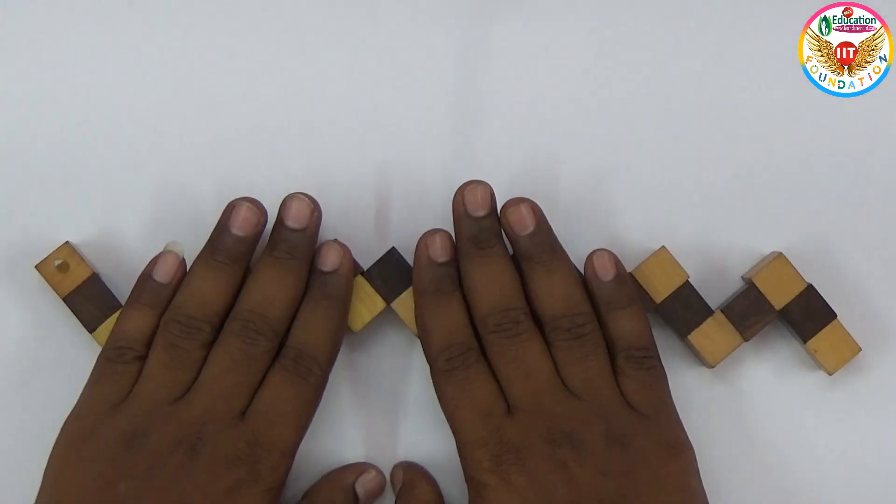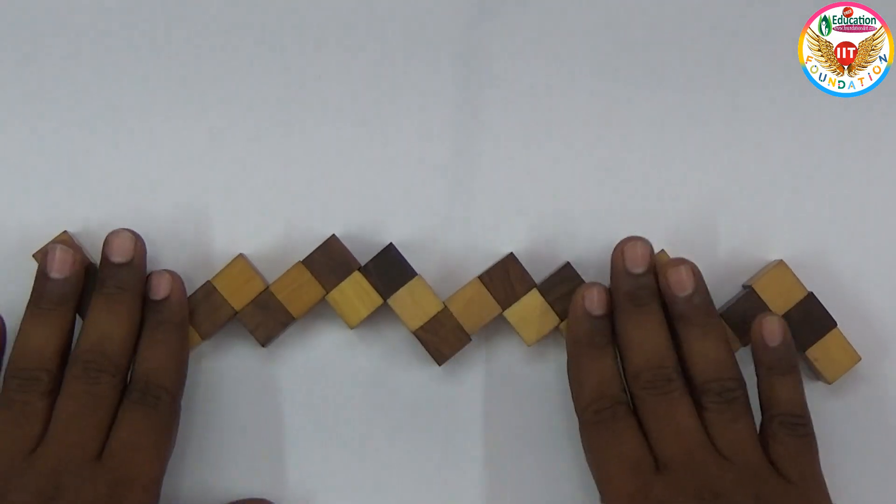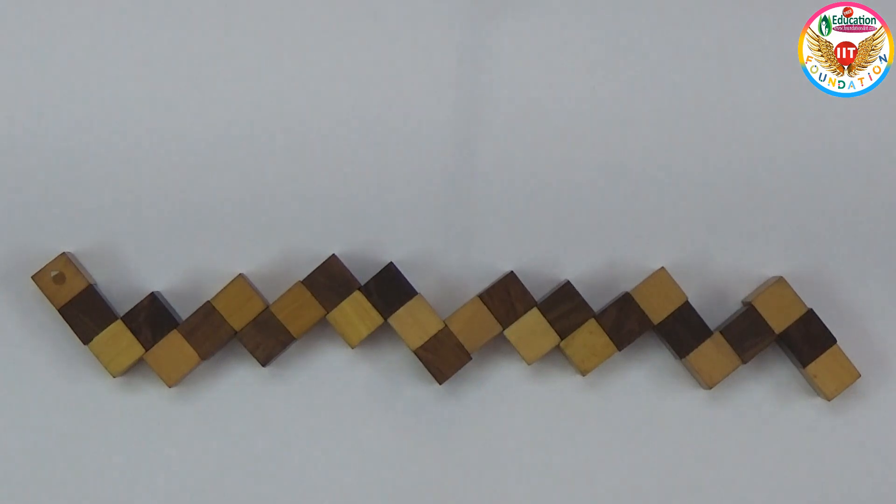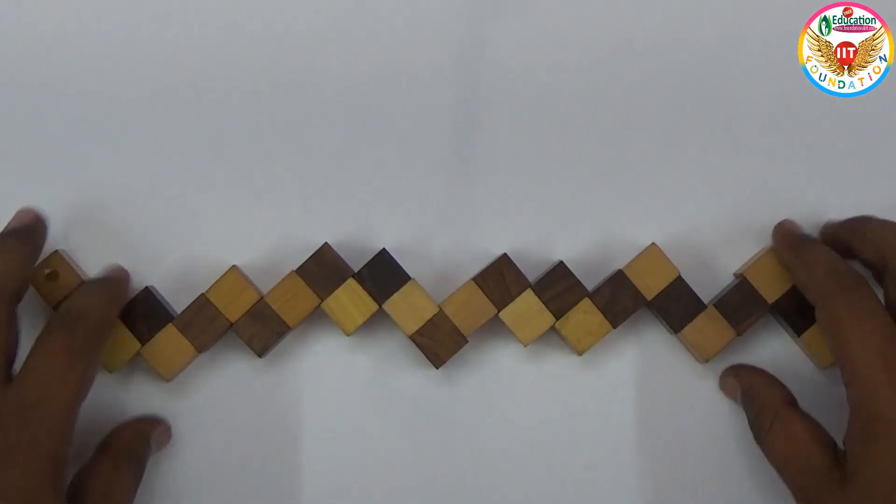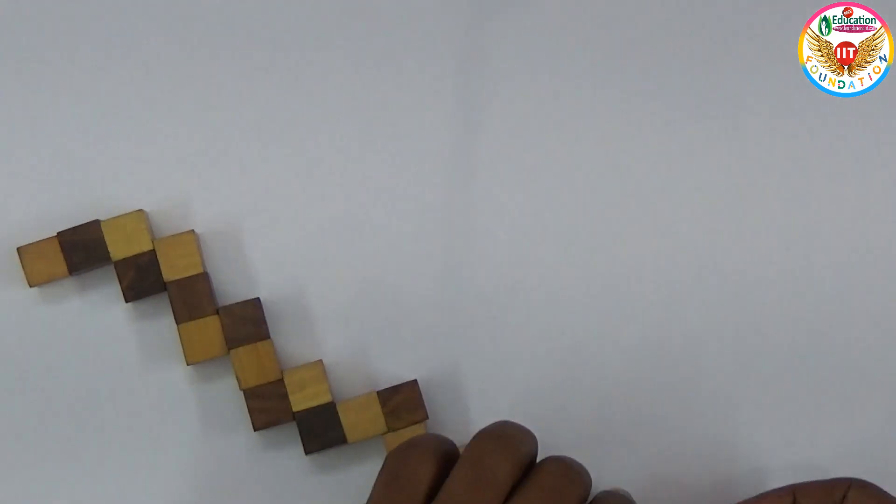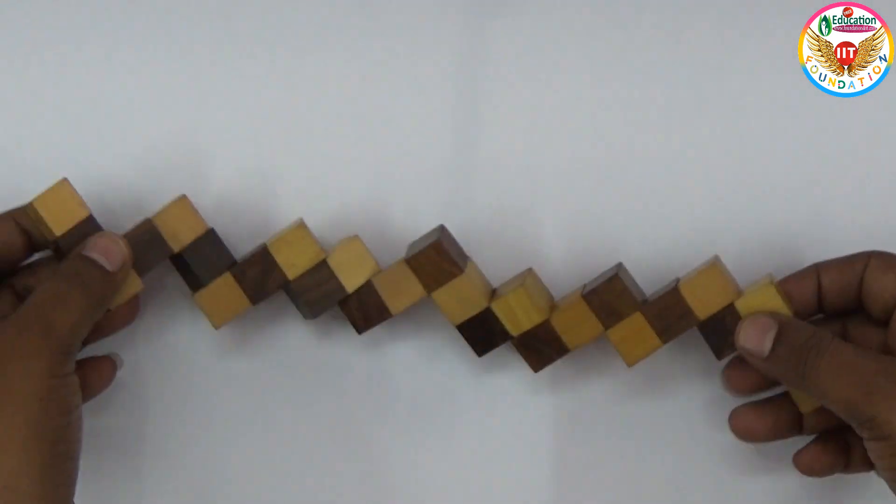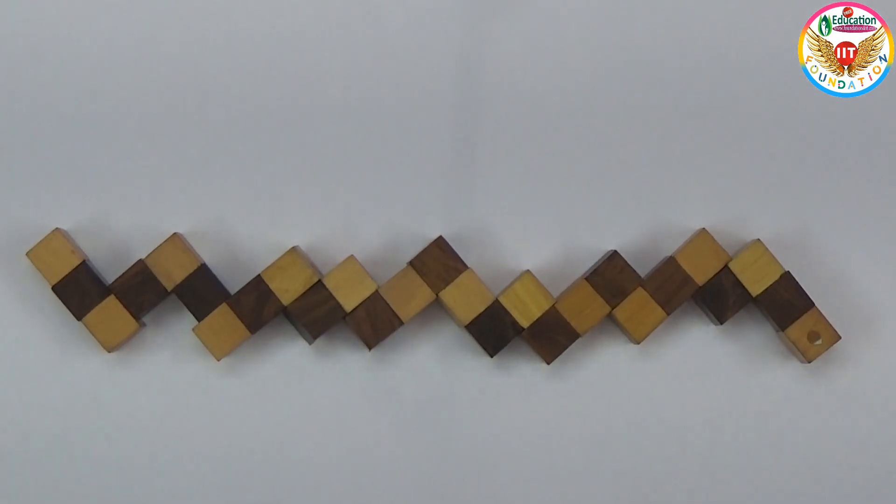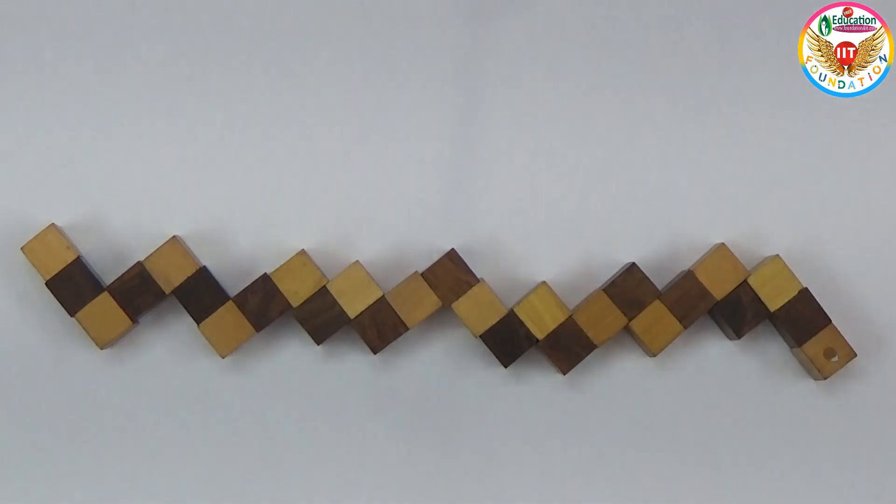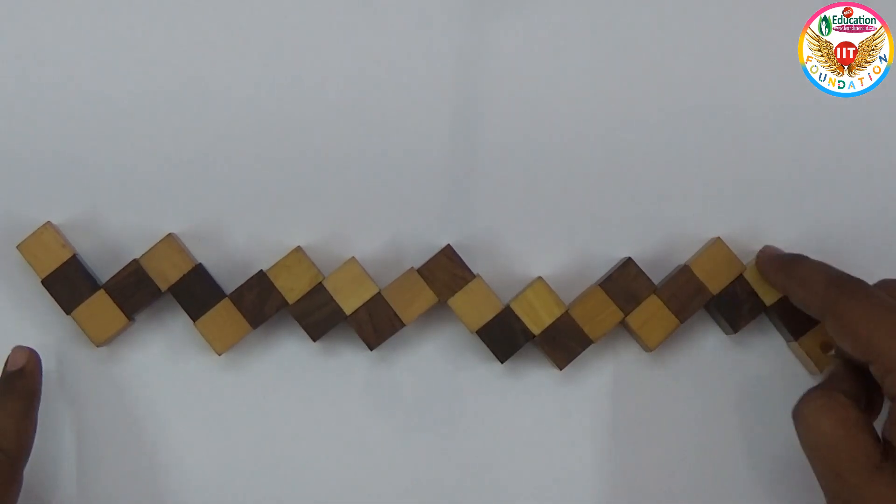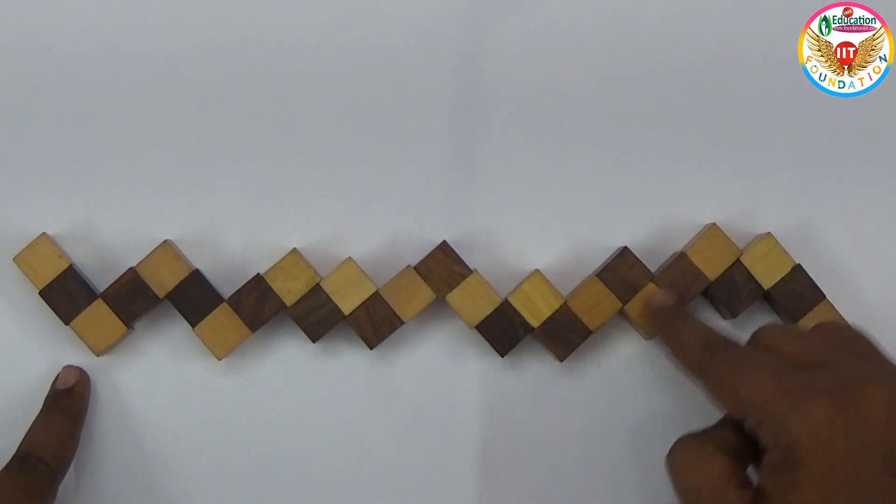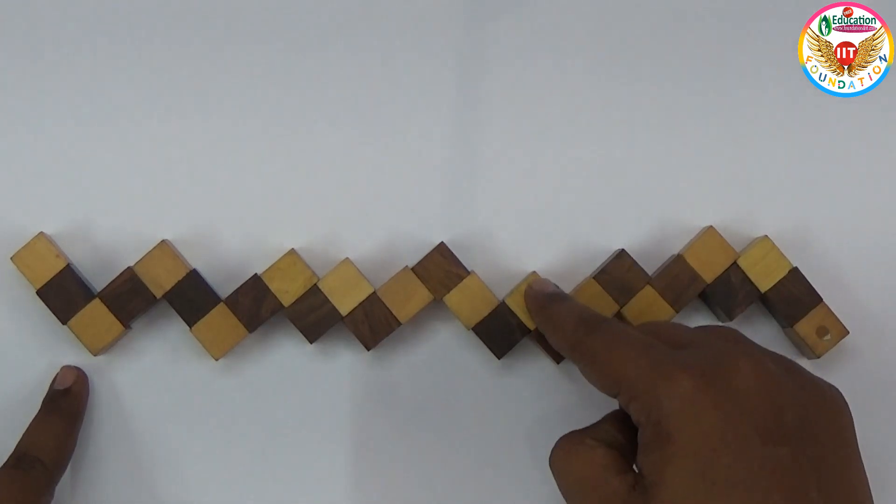So we can purchase this snake cube puzzle from online. After making this, you should exactly keep it in this position, because in this position only you can see. Like how I kept it, in this same way - here is a 3, 2, 2, again 3, 2, 3, 2, 2, like this.